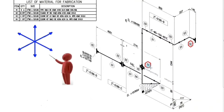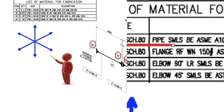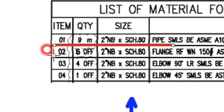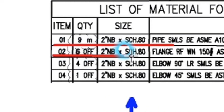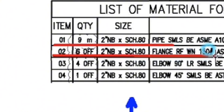These are details number 2. Let's look at the material list. Number 2: 6 pieces, 2 inch, schedule 80, flange, raised face, weld neck, class 150.